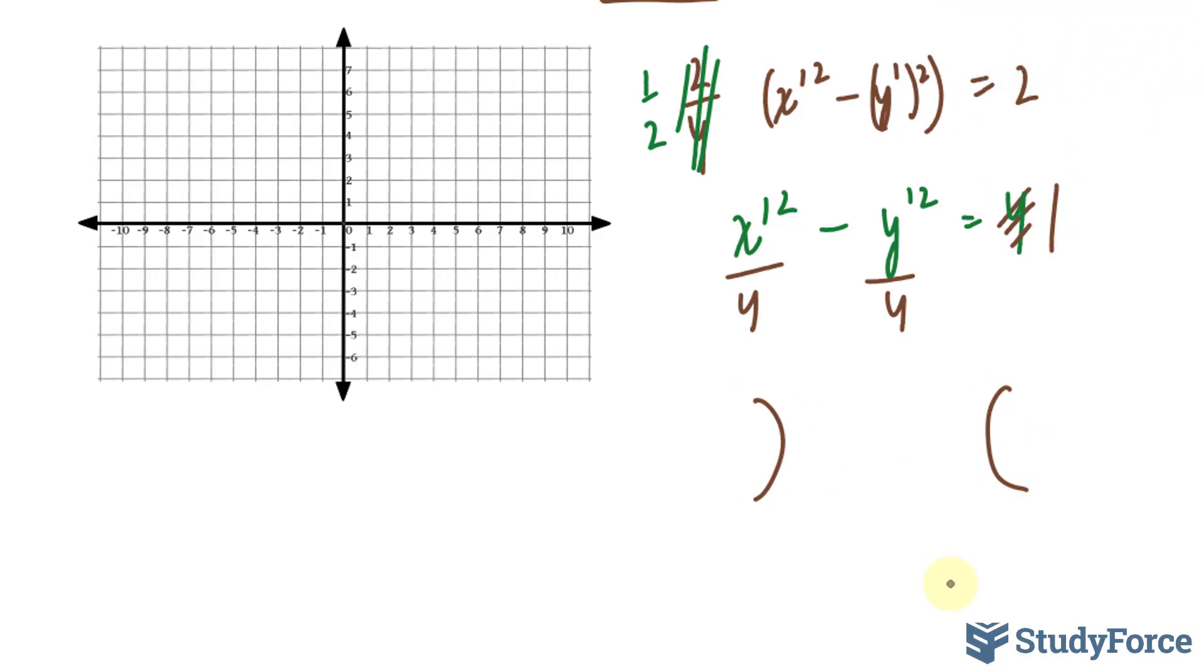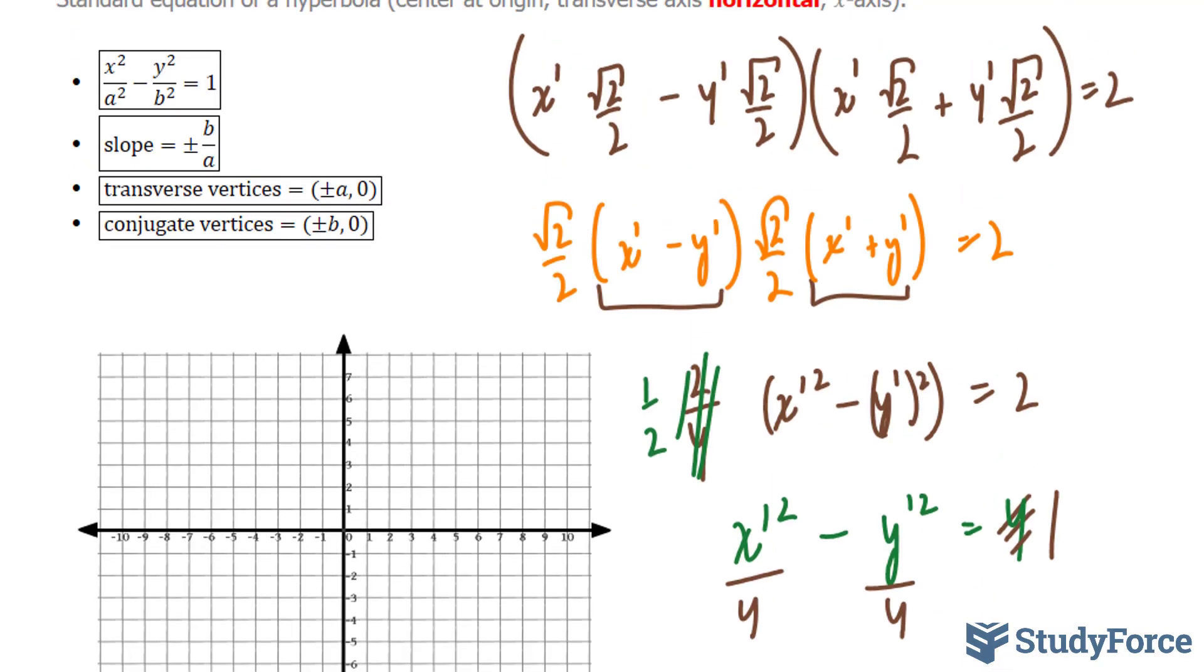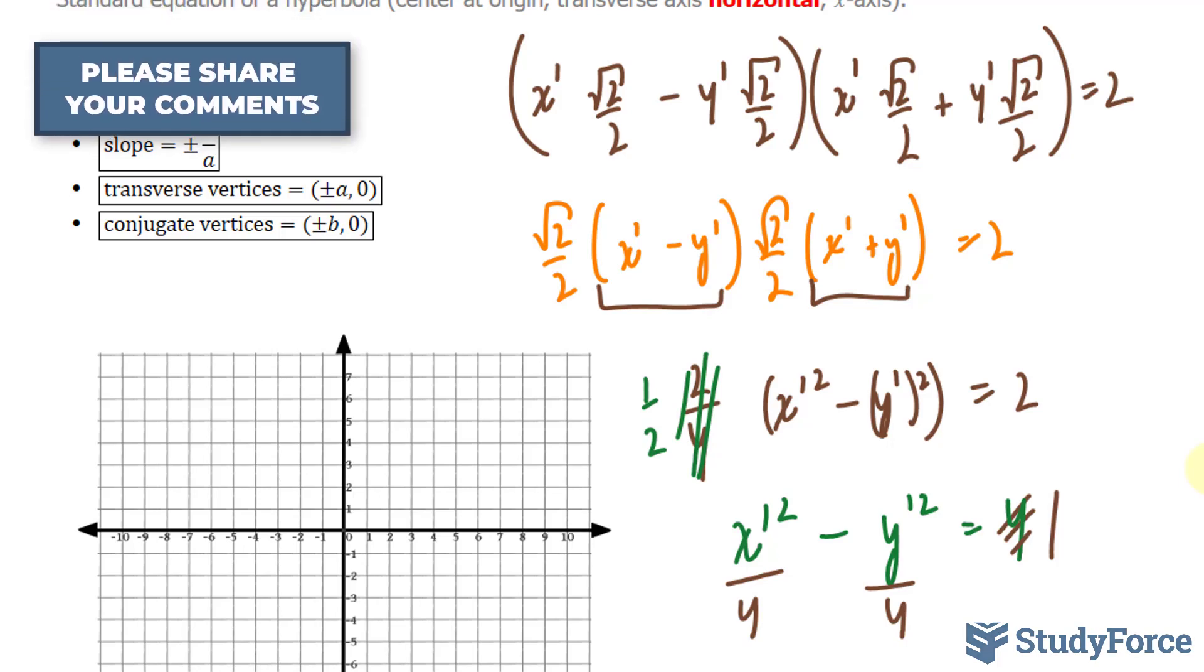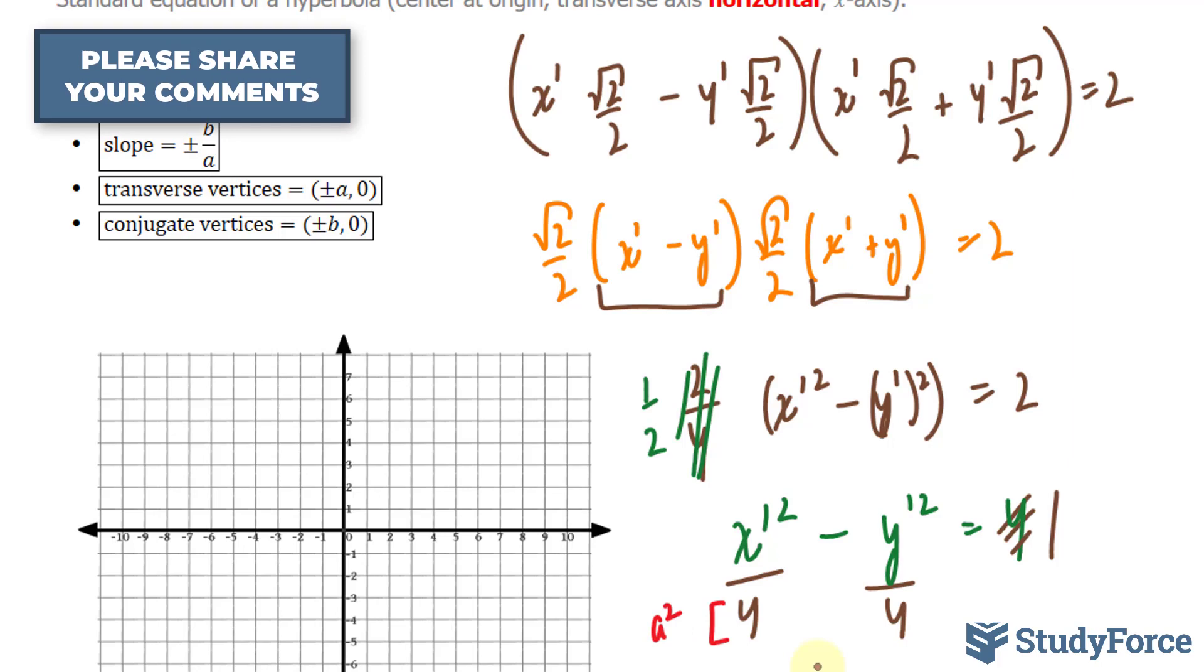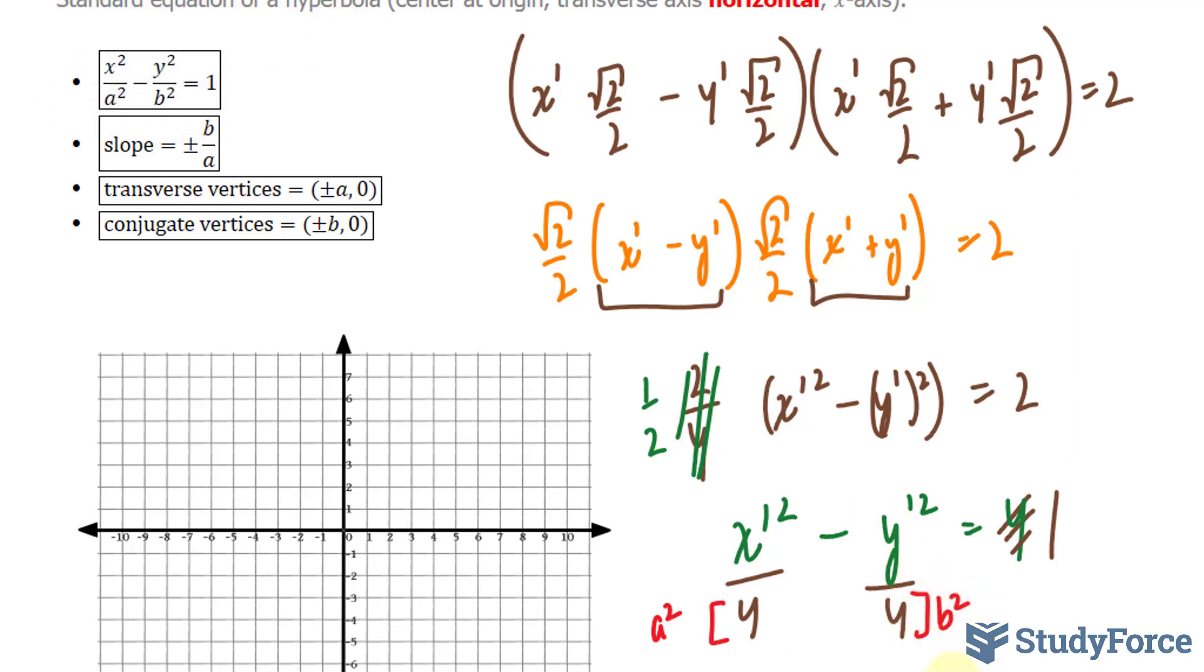So you'll have something that looks like this had it been a normal hyperbola. But we know it's not normal, it's being rotated, so we have to take that into account. Now if it were a normal hyperbola, you'd have a conjugate and a transverse axis. And those can be found by locating your a² and b² numbers.